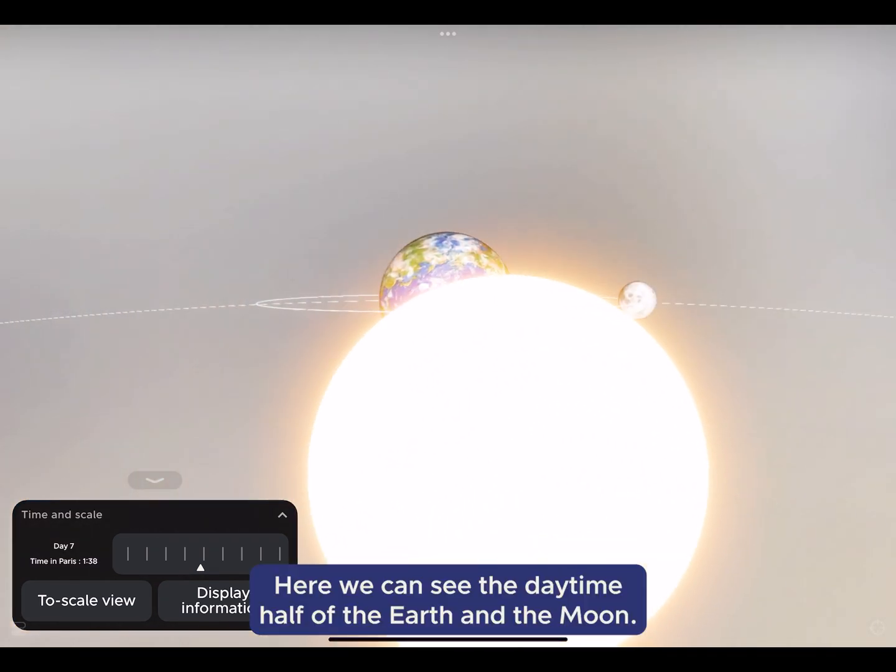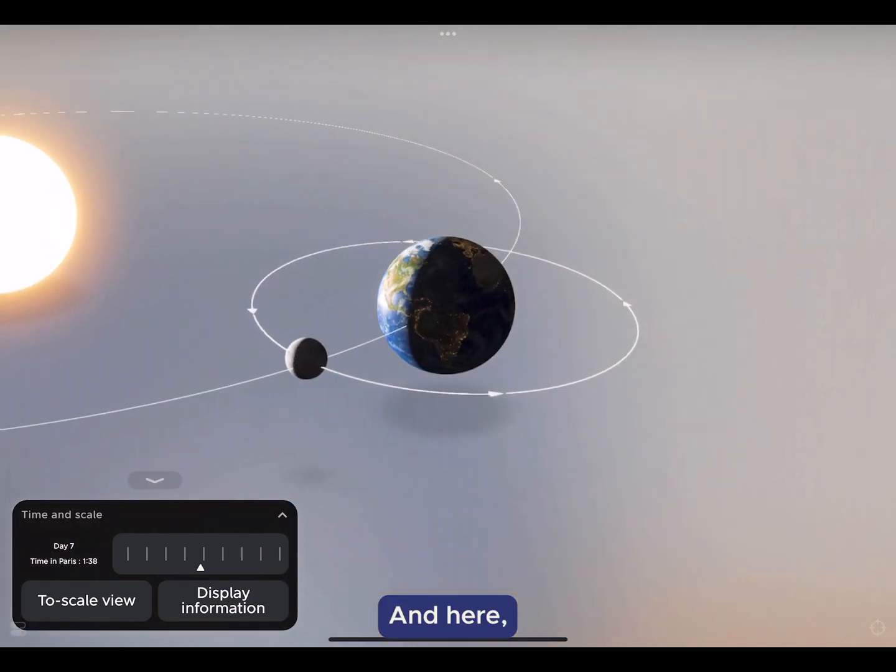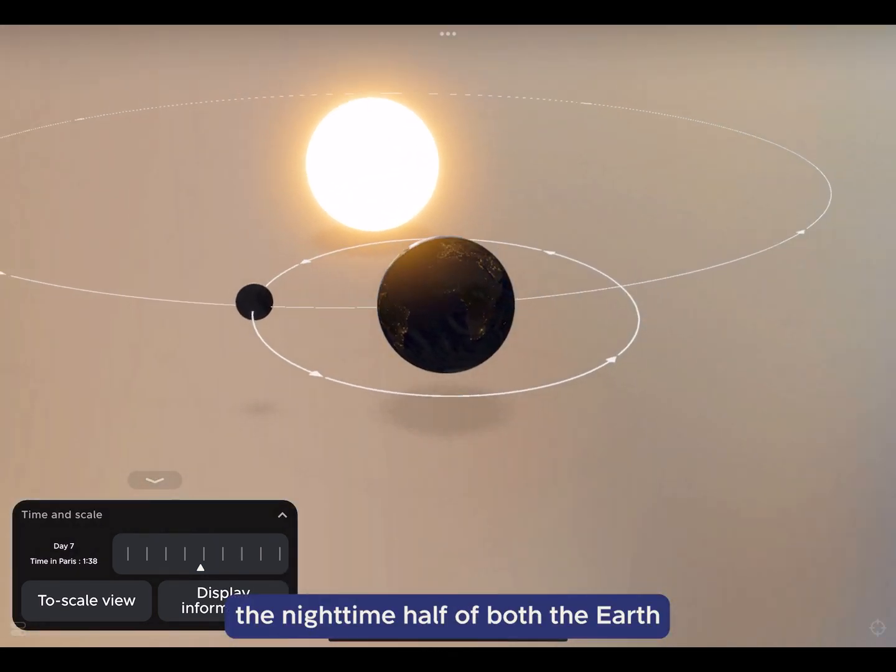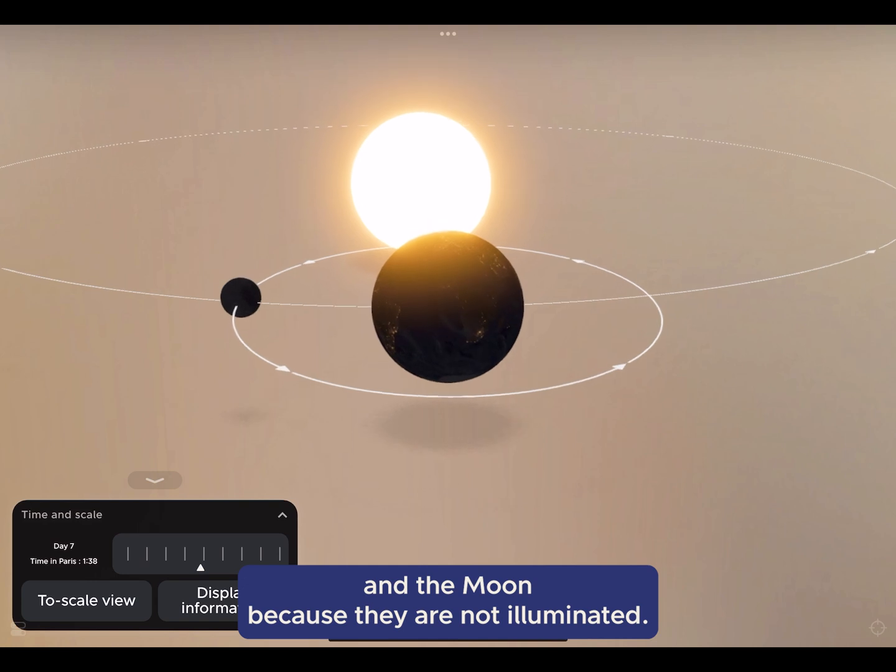Here, we can see the daytime half of the Earth and the Moon. And here, the nighttime half of both the Earth and the Moon because they are not illuminated.